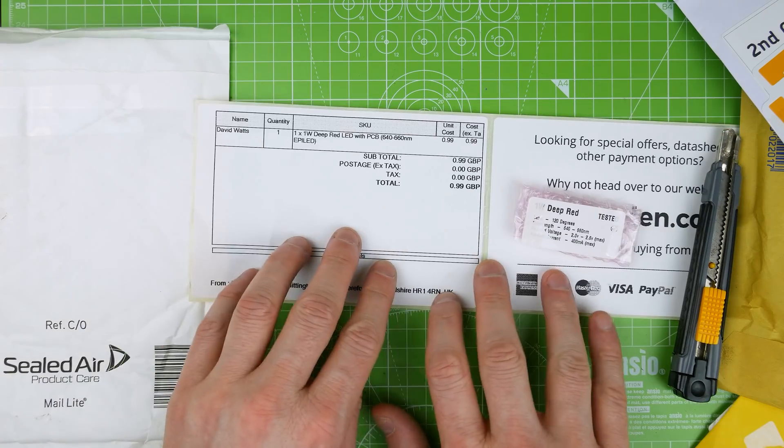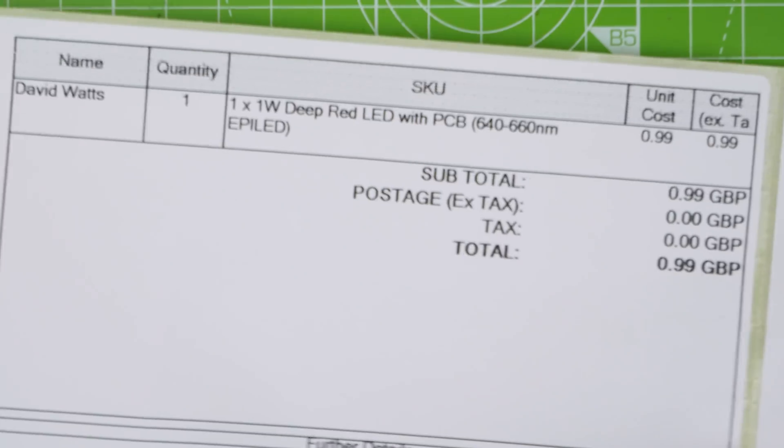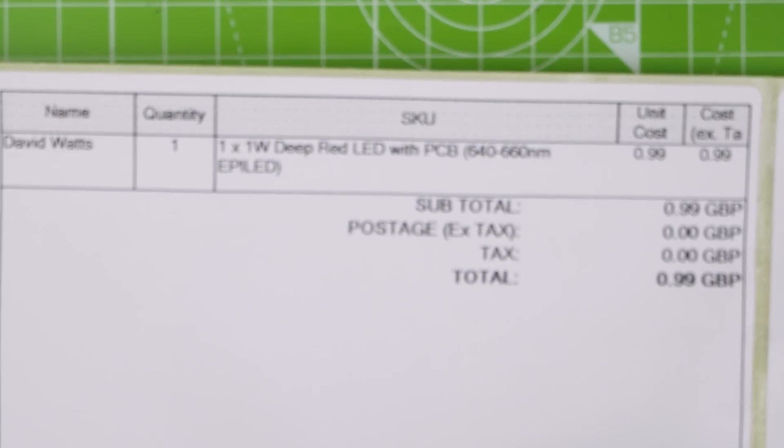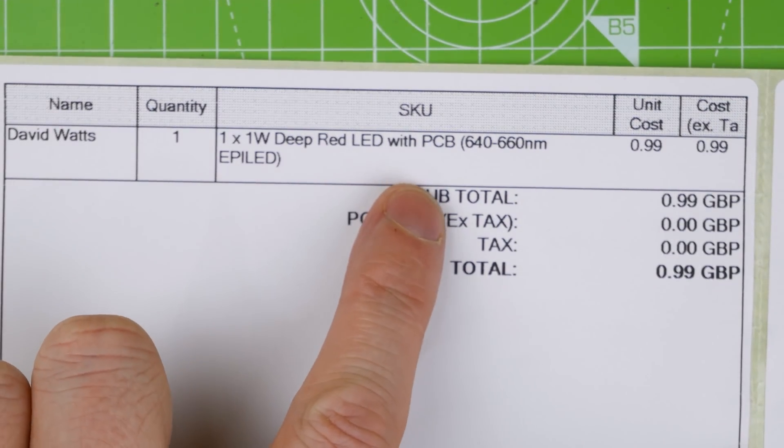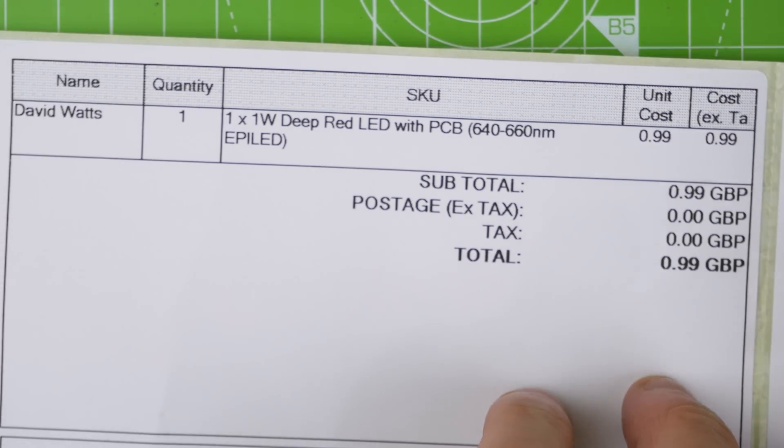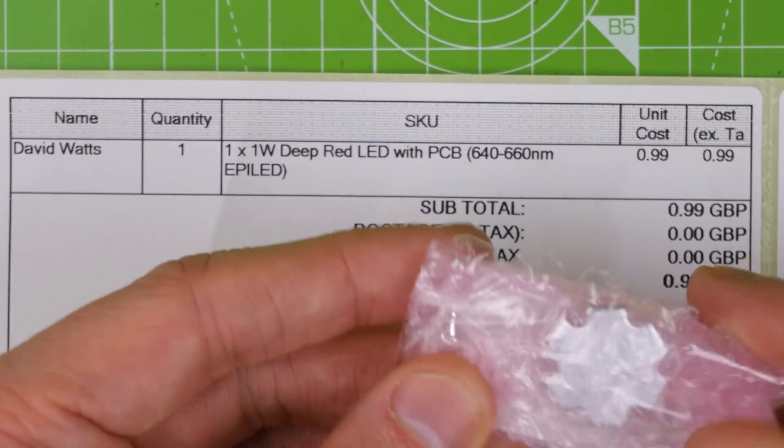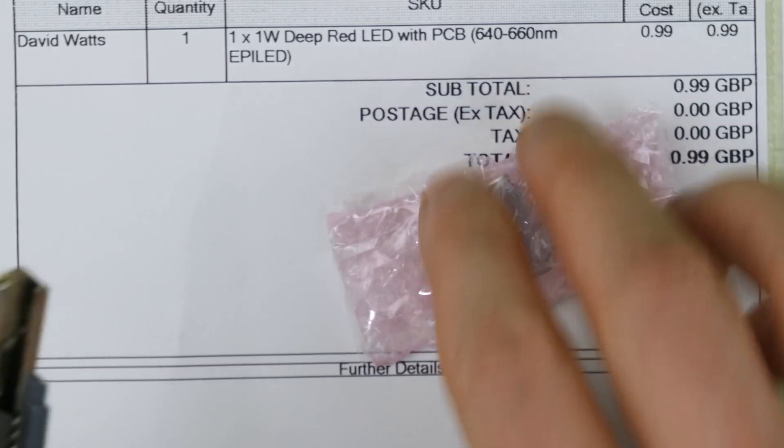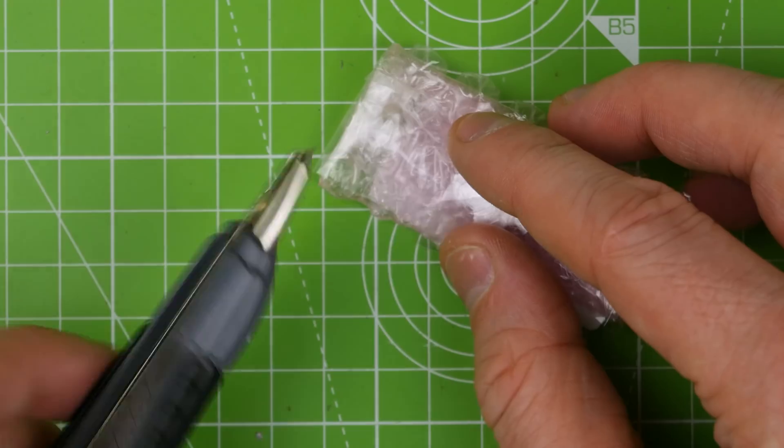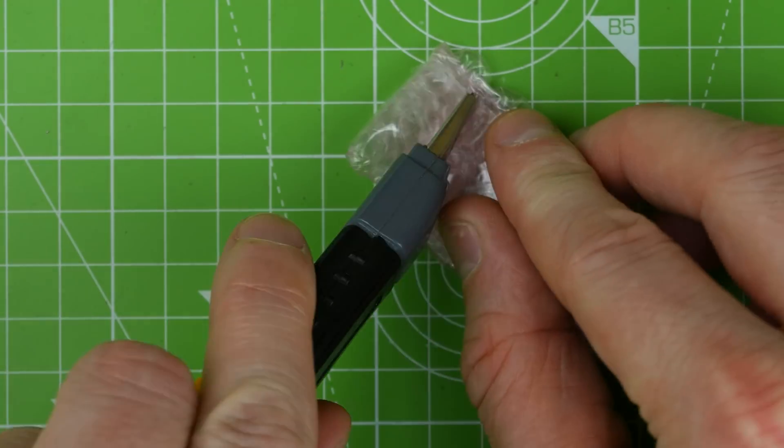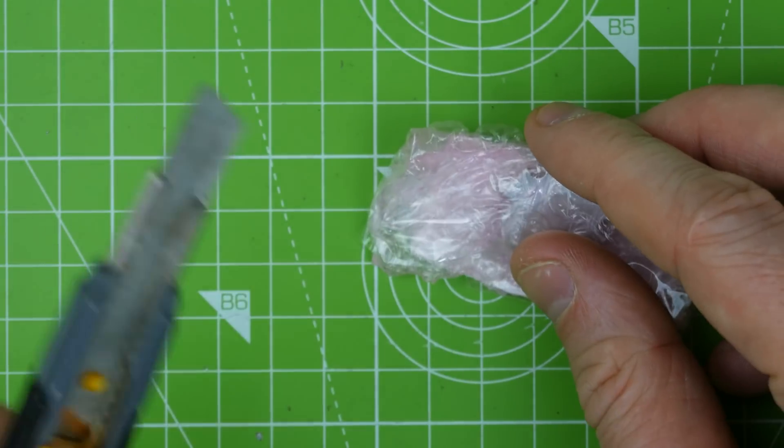So it just says what it is, which is, oh, there we go. A deep red LED with PCB. This is one of those one watt LEDs. Let's get it out of this thing. A little bit of advertising for them. Future Dean. And I've bought this for a very good reason. I say very good reason. This is one of those times where it isn't really a very good reason.